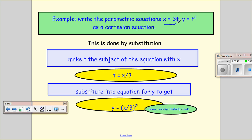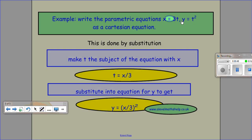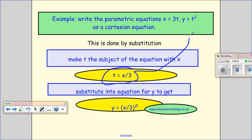Now this one I think is fairly straightforward. I just take my x equals 3t, I rearrange it to make t the subject of the equation, and then I substitute it back into my t squared. And so I get y equals x over 3 squared.